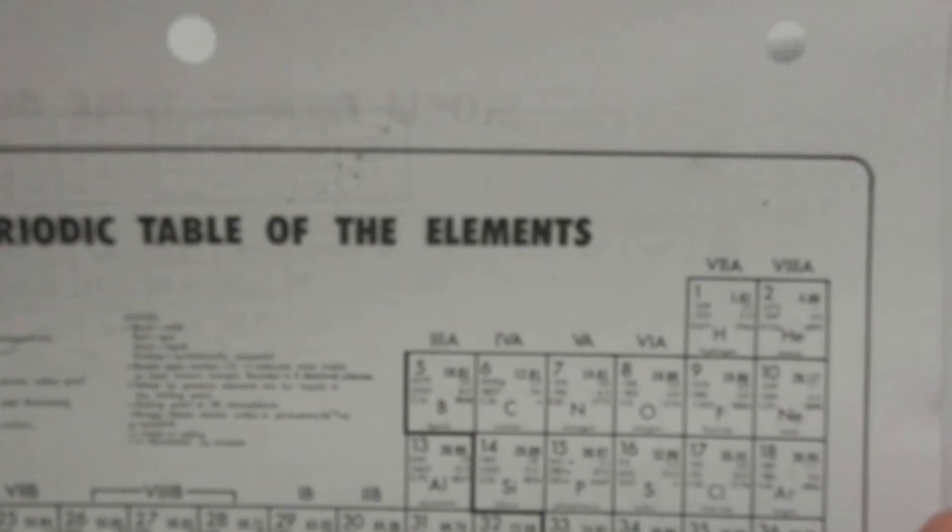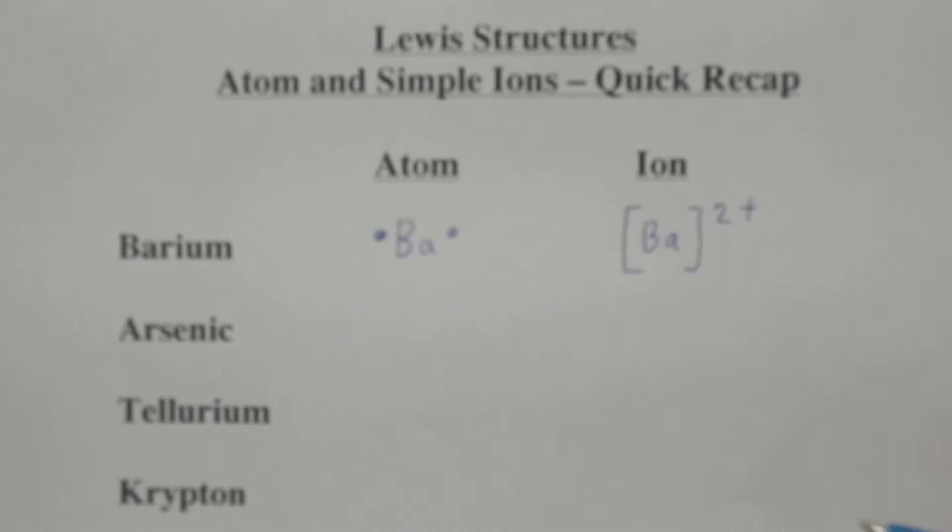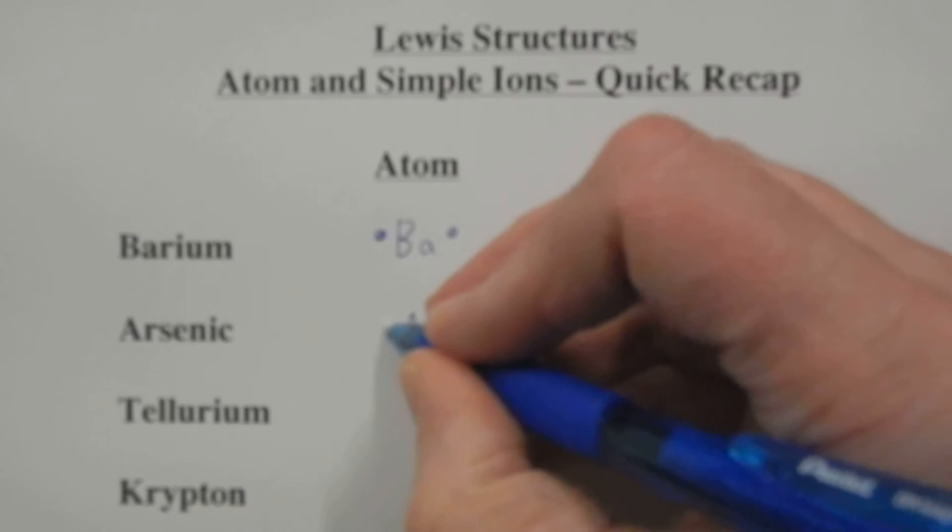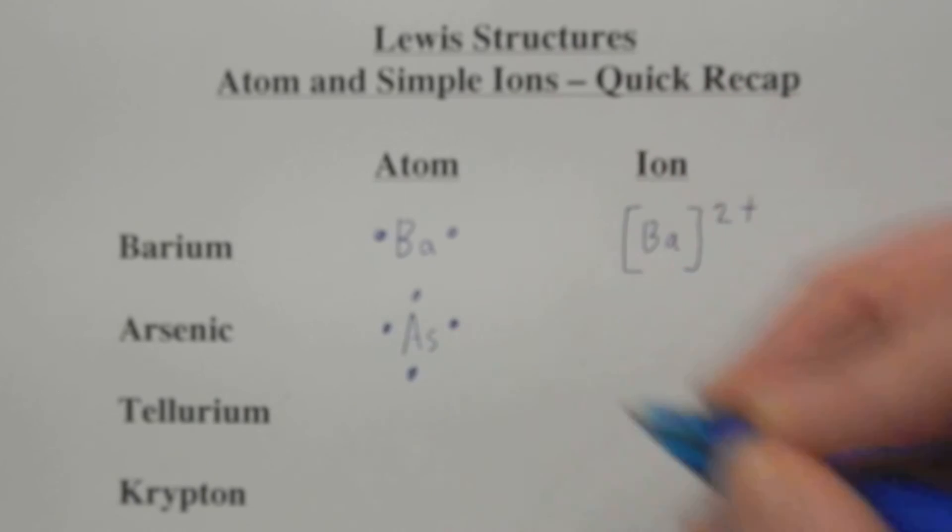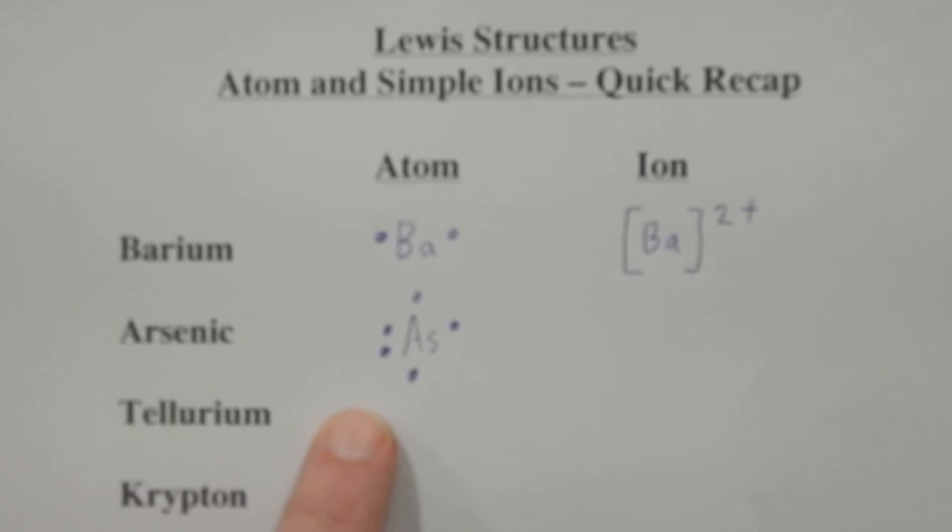We look at something we like to sprinkle on our breakfast, a little bit of arsenic, and we see arsenic is in group 5. So we go and we put a dot on four sides of the arsenic, and then we have to pair off one. It doesn't matter which one we pair off, but we should end up with a lone pair and three bonding electrons.